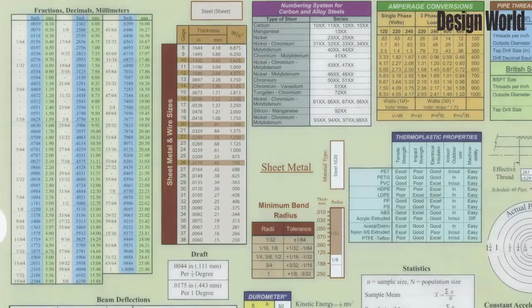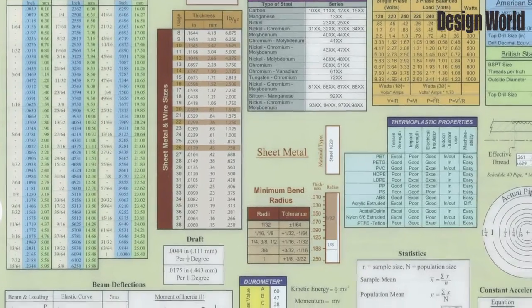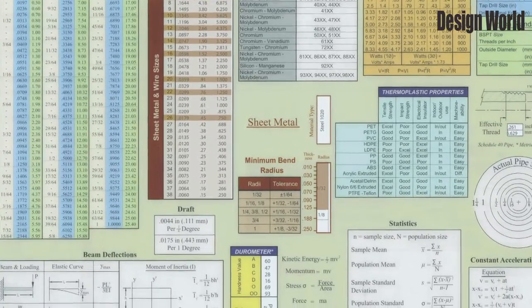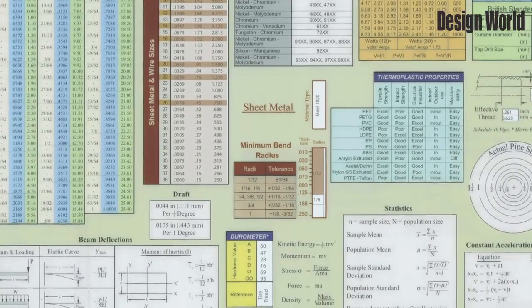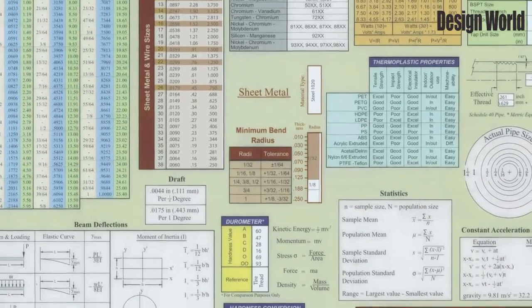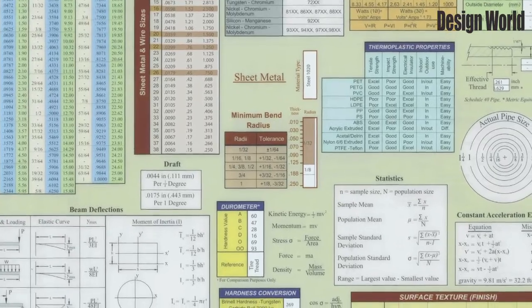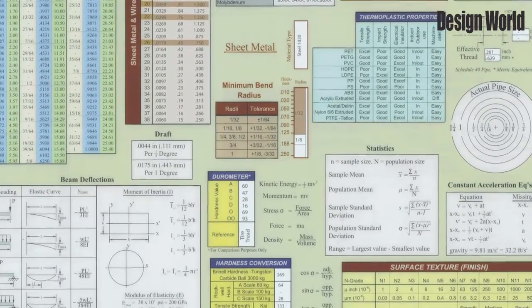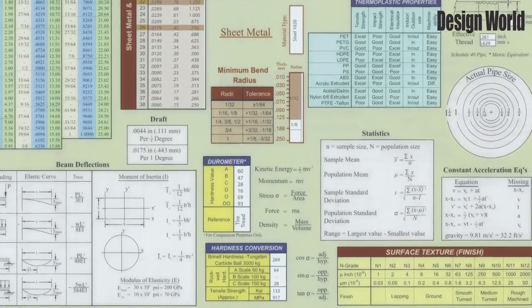On one side of this chart, there are measurements converting fractions, decimals, and millimeters. It also includes sheet metal and wire sizes per inch or millimeters for steel sheets.